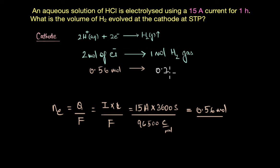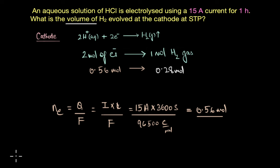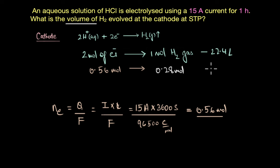We are looking for the volume of hydrogen gas evolved, not just the number of moles. Since one mole of a gas at STP occupies 22.4 liters, the volume occupied by 0.28 moles of hydrogen gas is 0.28 × 22.4, which gives a final volume of 6.272 liters.